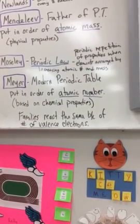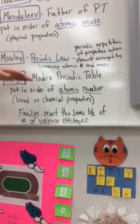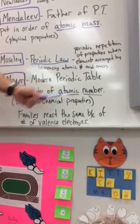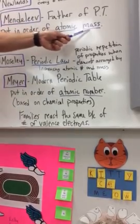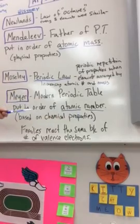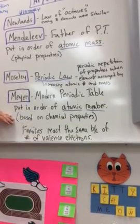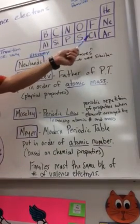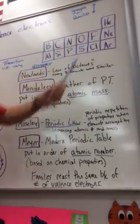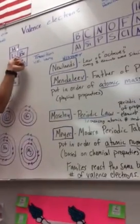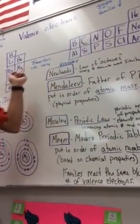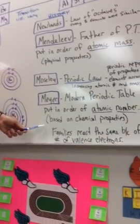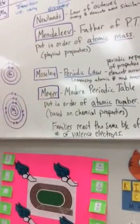Then Meijer — our third M: Mendeleev, Mosley, Meijer — came up with the modern periodic table. The modern periodic table is put in order of atomic number, so Mendeleev used atomic mass, and Meijer used atomic number, and that is the way it's put together today. That's based on chemical properties. There are about four exceptions where the mass goes down, but the atomic number is in the right order — that's the number of protons. He also knew that families reacted the same because of the number of valence electrons.